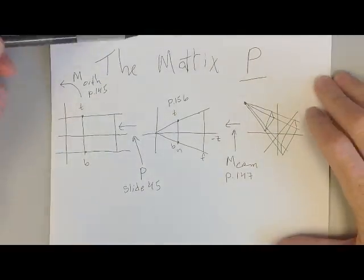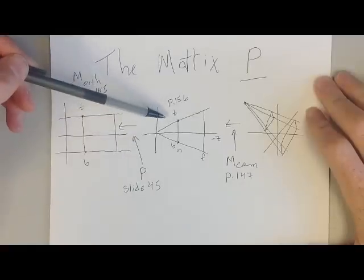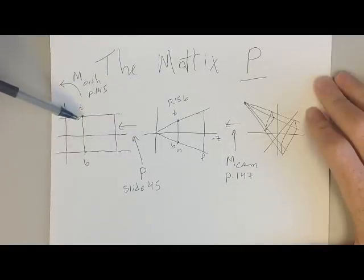Alright, so in this video we're going to talk about the matrix P. The matrix P takes a perspective camera view volume and turns it into an orthographic camera view volume.